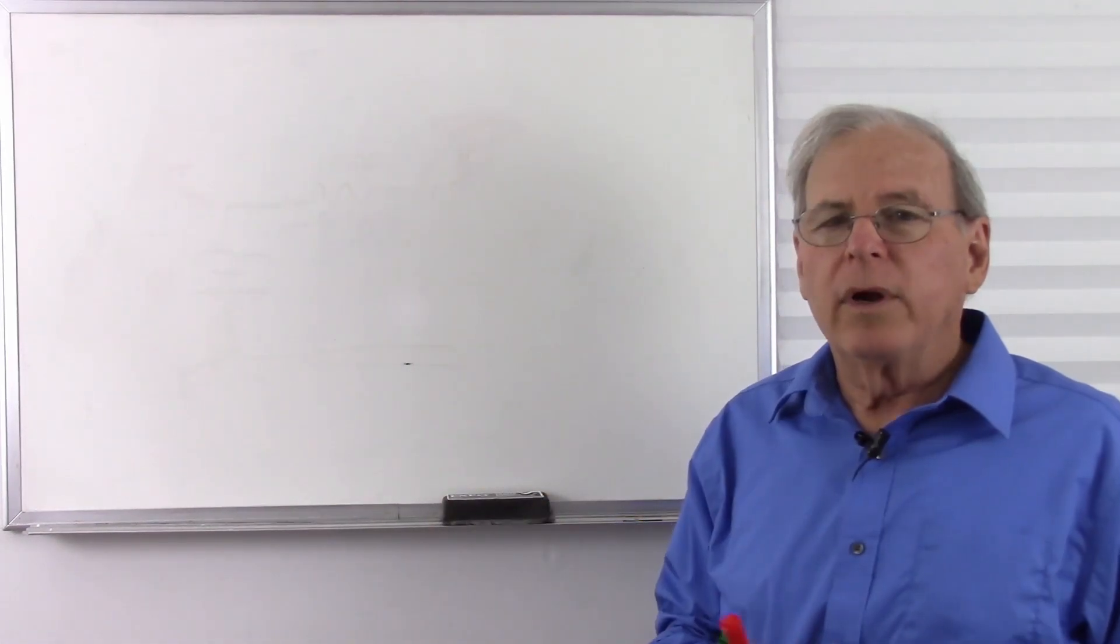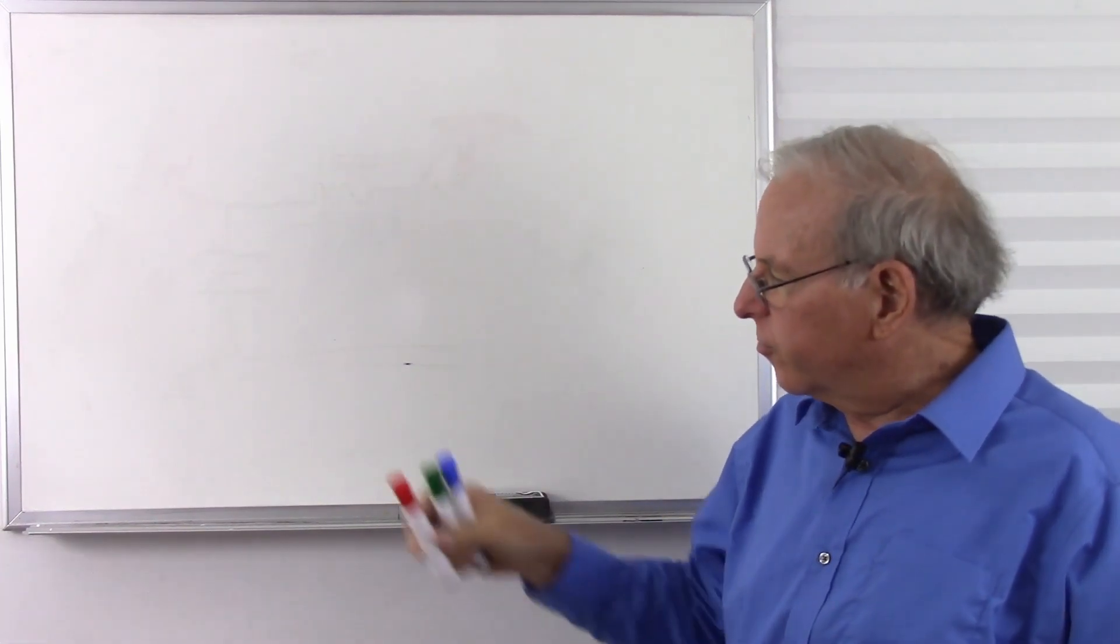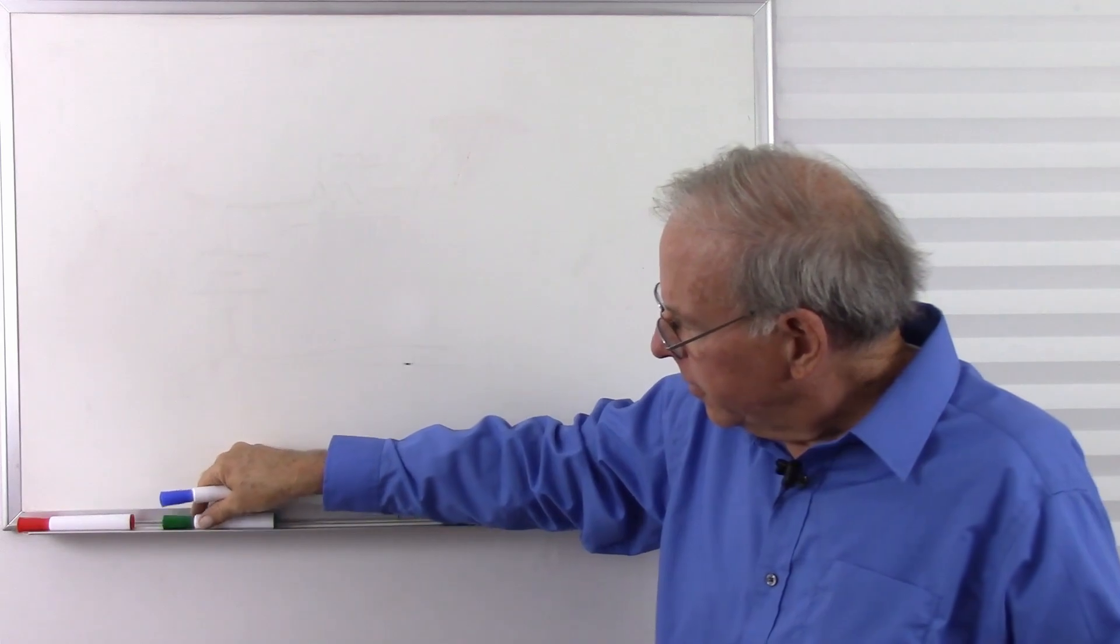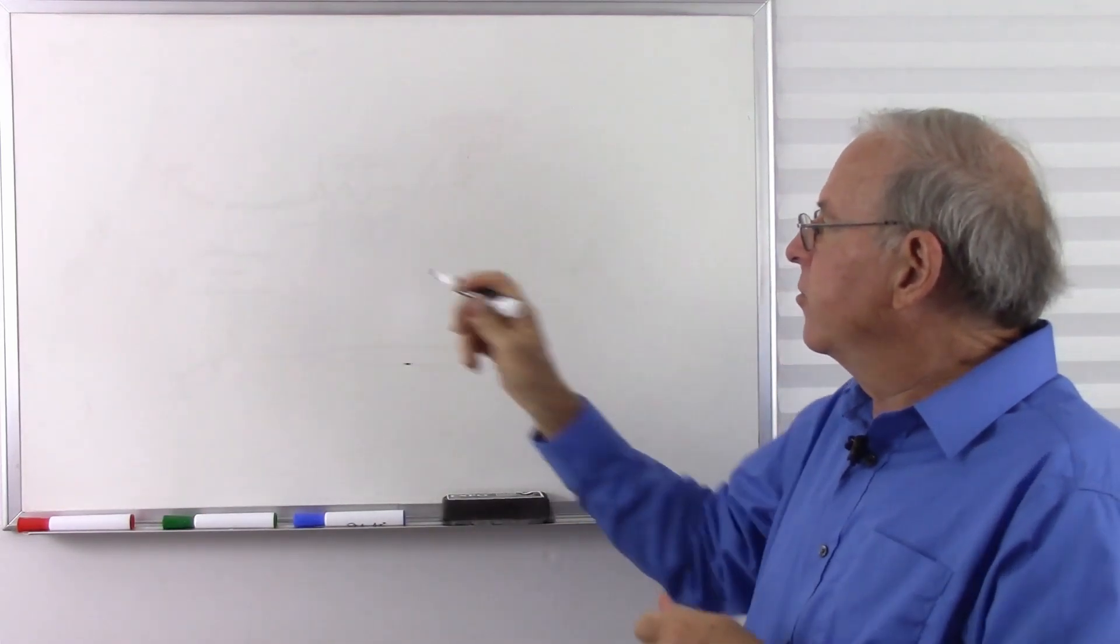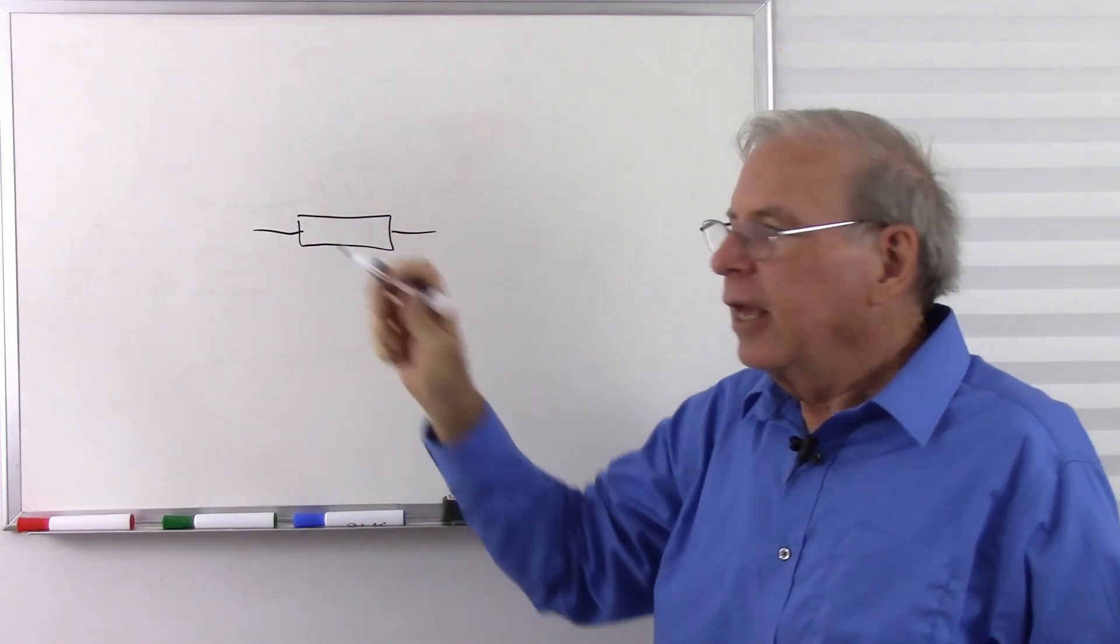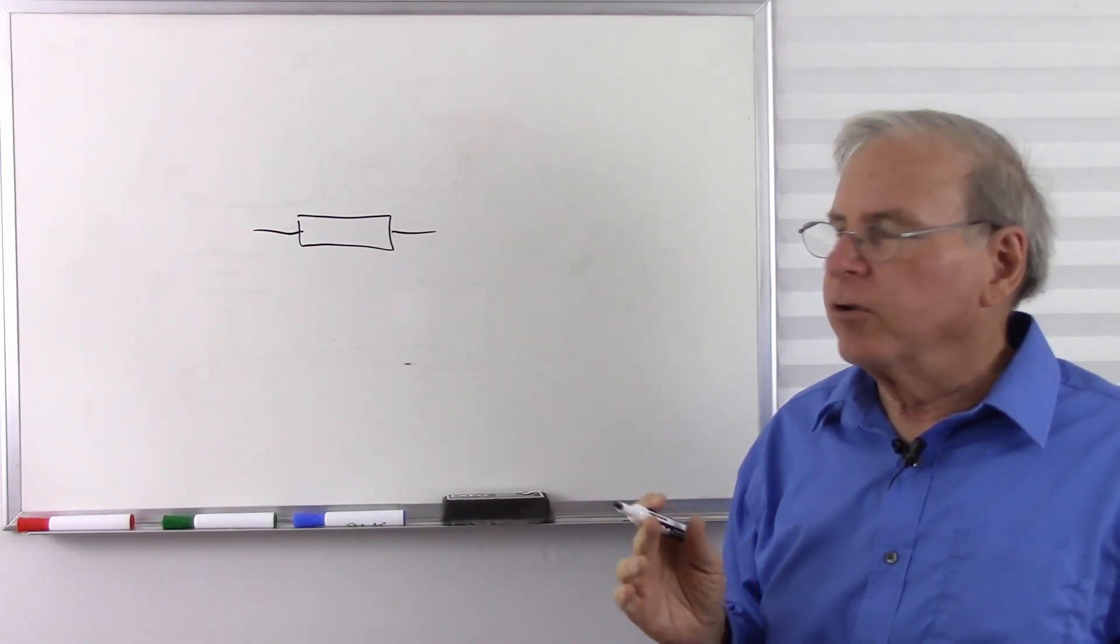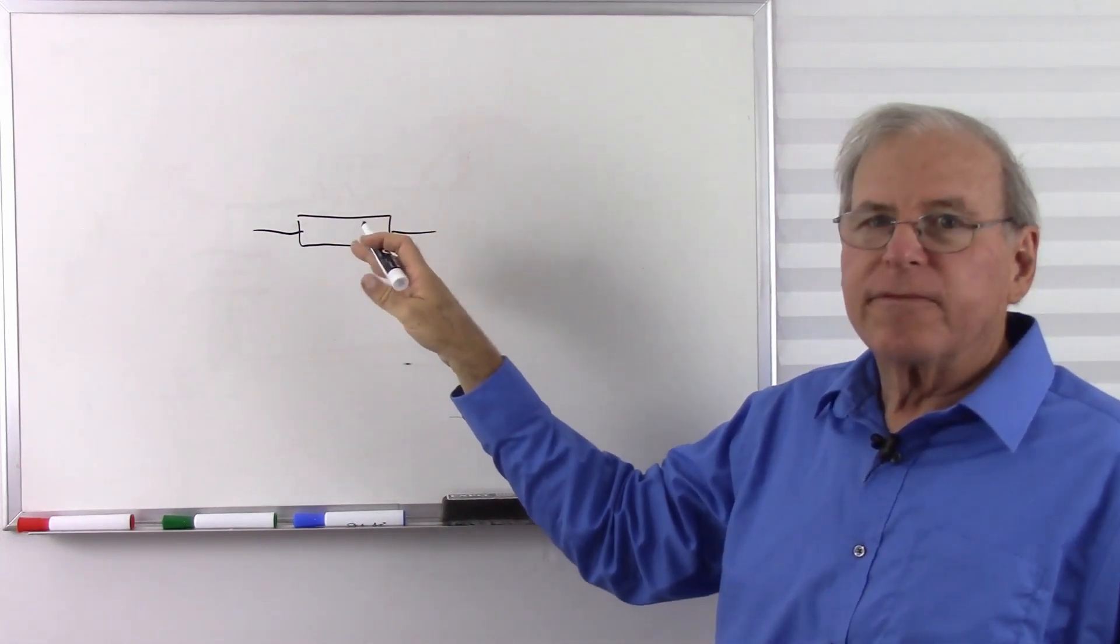One type of resistor we don't see that much anymore is a carbon composition resistor. It's just a block of carbon with a couple of leads connected to it. And they're not very accurate, which is one reason we don't see them too often. So they have a fairly low tolerance.